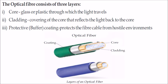The optical fiber consists of three layers. As seen in the figure, we have a core of glass or plastic through which light travels. Then we have cladding, which is the covering of the core that reflects the light back into the core — this is achieved through total internal reflection. Then we have a protective buffer or coating, which protects the fiber cable from any hostile environment.